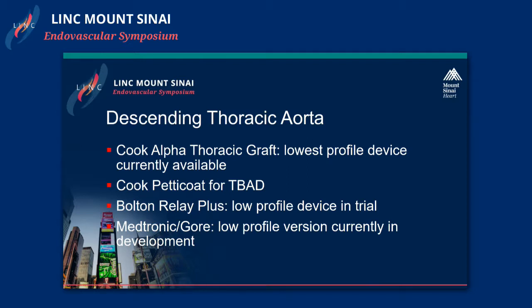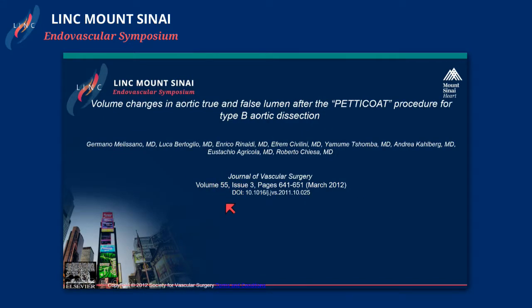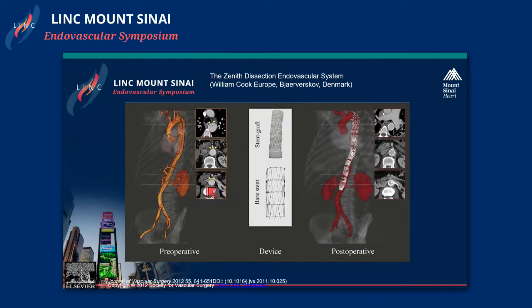With the descending thoracic aorta, most in the room are probably familiar with the current available thoracic stent grafts. The Cook Alpha is the current lowest-profile device available on the market. The Cook Petticoat will hopefully be available in the United States by the end of the year. Bolton also has a low-profile device currently in trial, and Medtronic and Gore both have lower-profile versions in development. The Petticoat is really for management of acute type B aortic dissection — you cover the proximal entry tear, manage the proximal aorta as needed, then extend down with this bare stent, called a petticoat, to enhance the true lumen and allow it to remodel favorably.